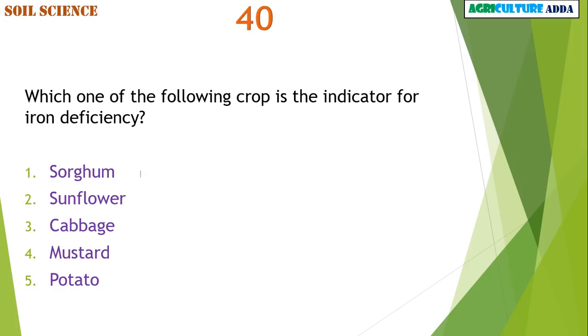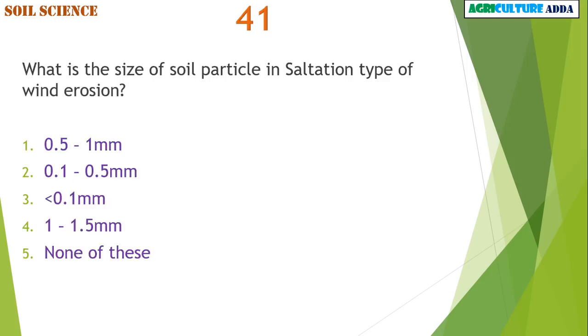Which one of the following crops is the indicator for iron deficiency? Sorghum. What is the size of soil particle in saltation type of wind erosion?